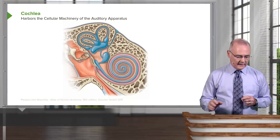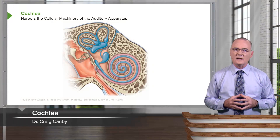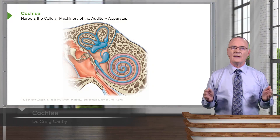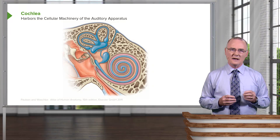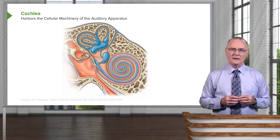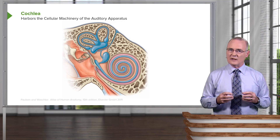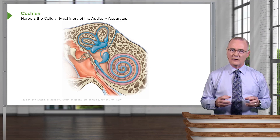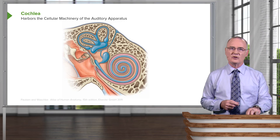The cochlea is the structure of the inner ear that harbors the cellular machinery of the auditory apparatus. Its characteristics are very unique in order for it to carry out its marvelous function.